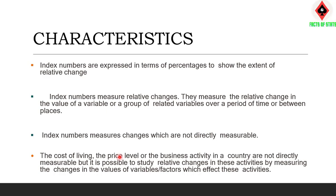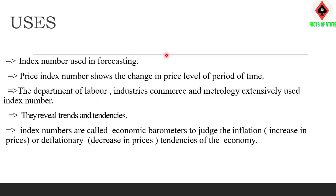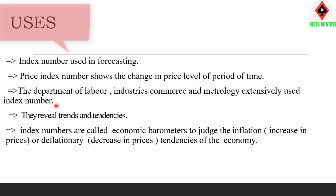In our economy, index numbers show whether prices have moved upward or downward. Uses of index numbers: The price index number shows the change in price level over a period of time. The department of labor, industries, and commerce extensively use index numbers. Index numbers are called an economic barometer to judge inflationary or deflationary trends.